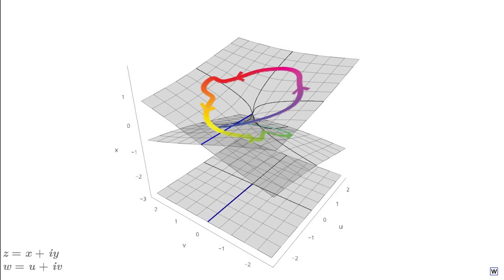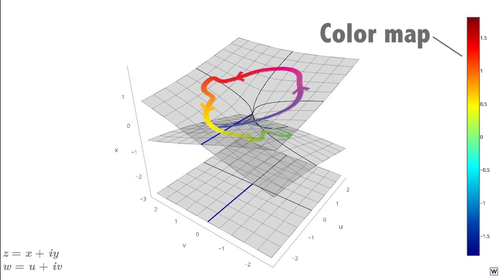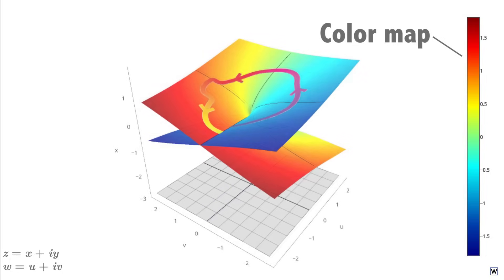However, there are some very clever ways to get a feel for what's happening in our missing fourth dimension. One approach is to expand our visualization to include another dimension of human perception, such as color. We'll color each point on our surface with a color that corresponds to the value of the fourth dimension of our function, in this case, the imaginary part of Z, Y. To do this, we need to decide which colors to map to which numbers. This is called a color map. Our colors now give us a nice idea of what's happening in our missing fourth dimension, Y.